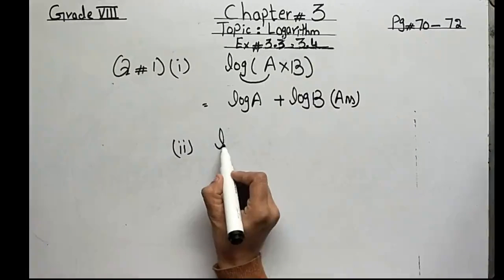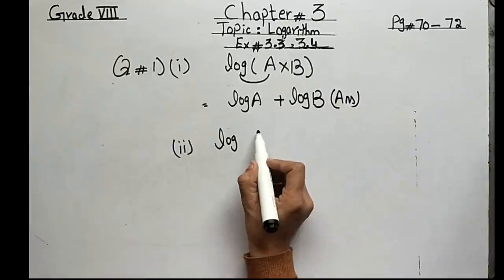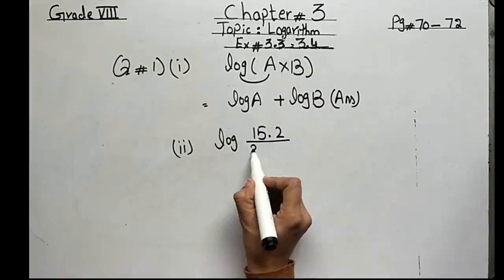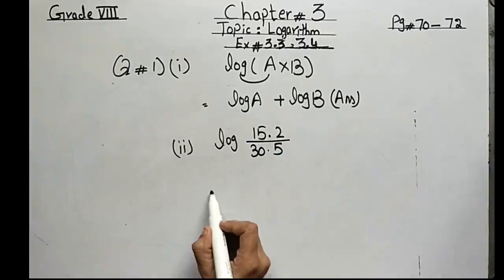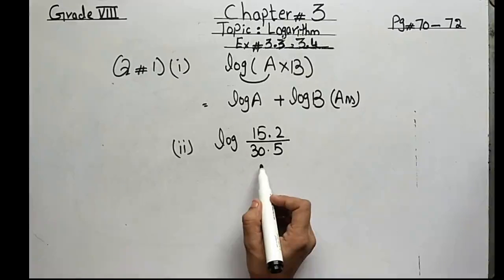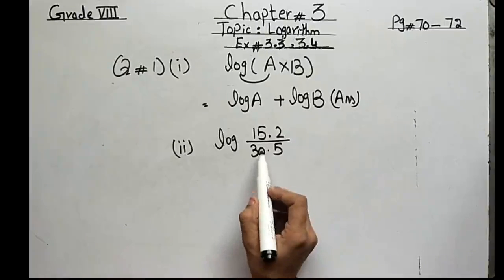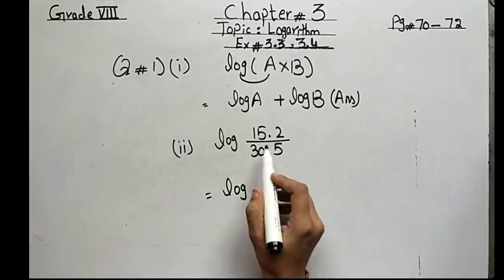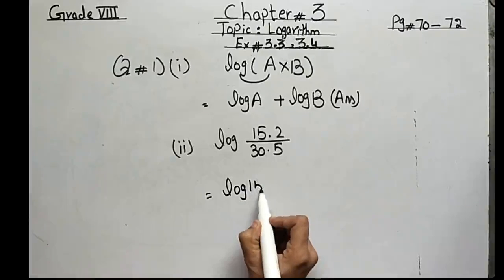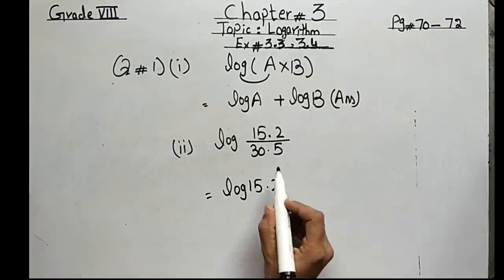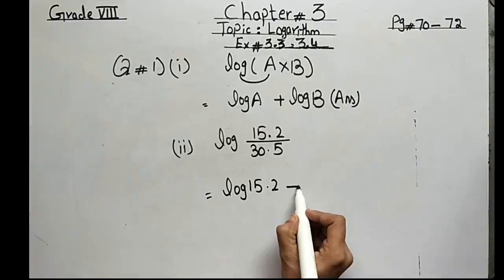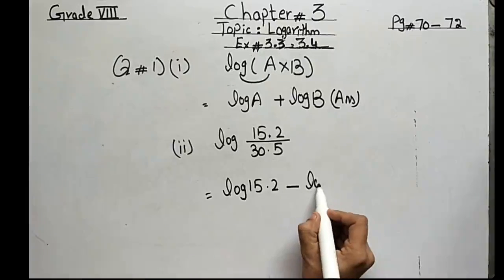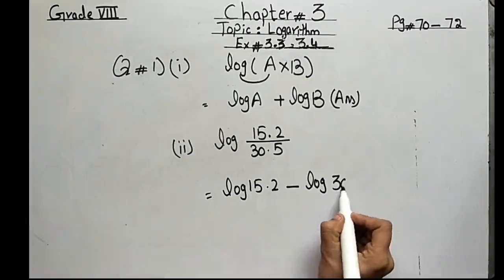The second part is log of 15.2 divided by 30.5. Apply the log on both terms — they are dividing. When we apply the log, first the log applies on the numerator 15.2, then the division sign converts into the subtraction sign, then the log applies on the denominator, giving log(15.2) − log(30.5).